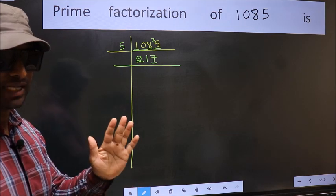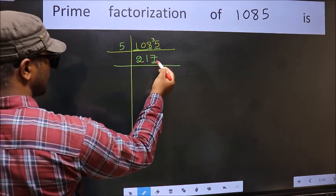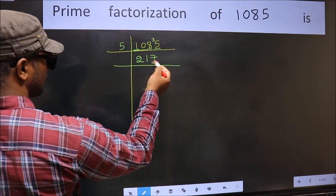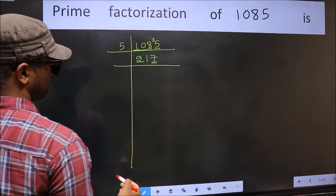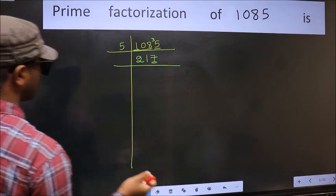Next prime number is 5. Here the last digit is neither 0 nor 5, so this is not divisible by 5. Next prime number is 7. Let us check divisibility by 7.